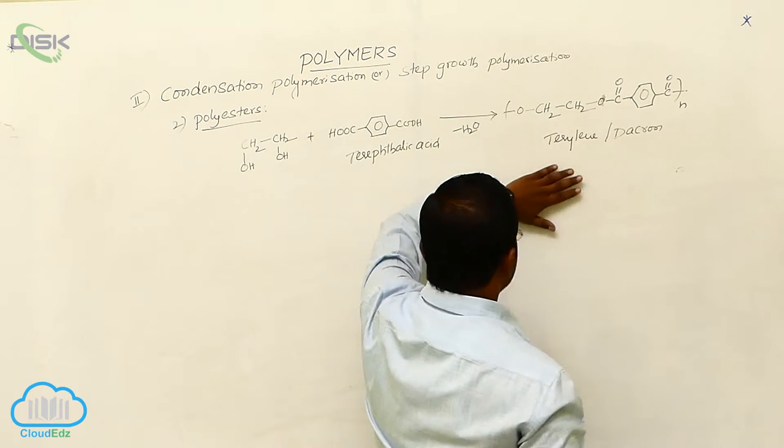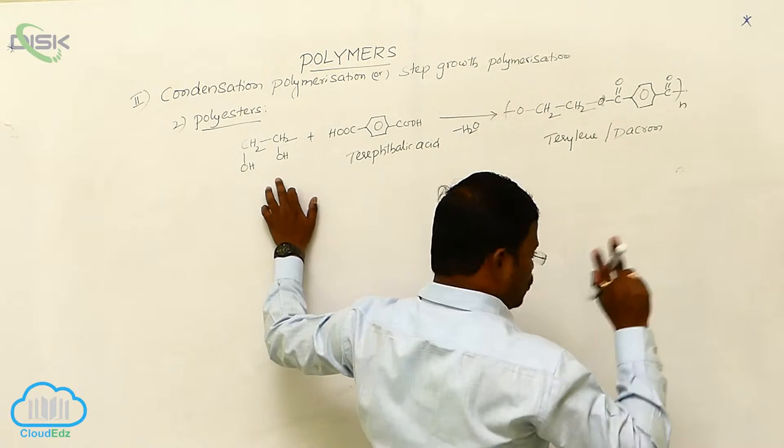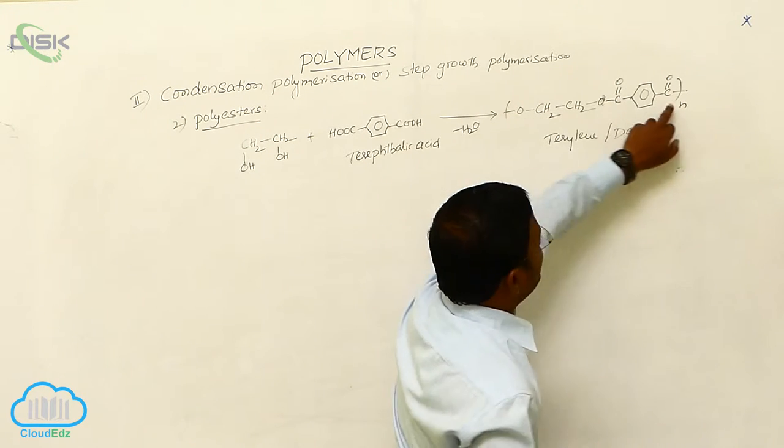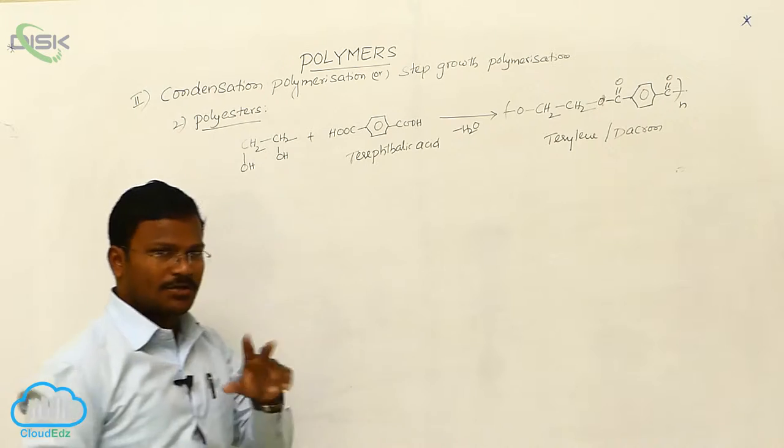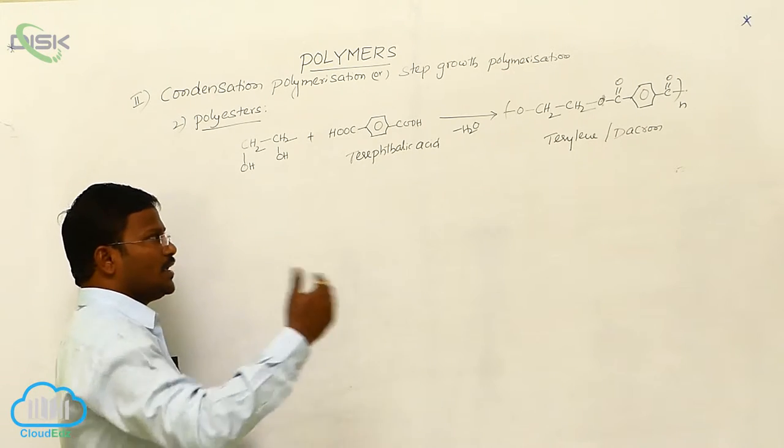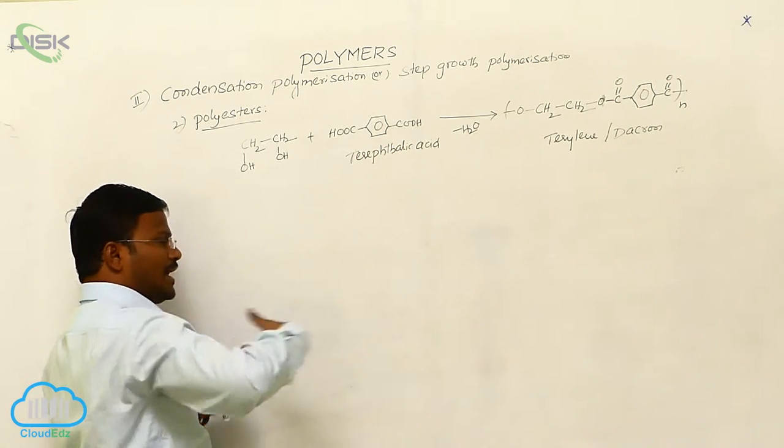The resulting dimer is called a dimer because it results from two monomers. At one terminal position and another terminal position are functional groups. These two functional groups readily react with more molecules to extend the chain.